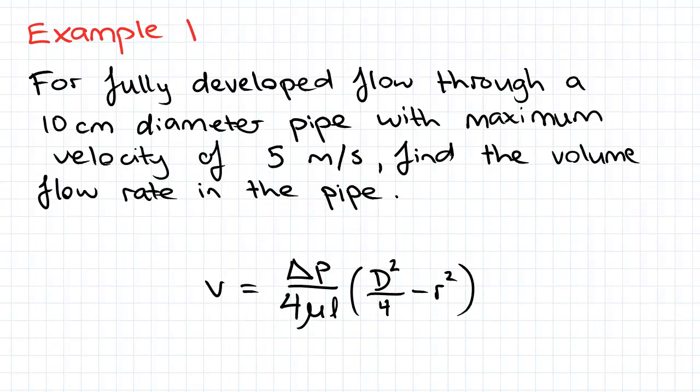So in example 1, we've got a fully developed flow through a 10cm diameter pipe with maximum velocity 5m per second. We've been asked to find the volume flow rate in the pipe.